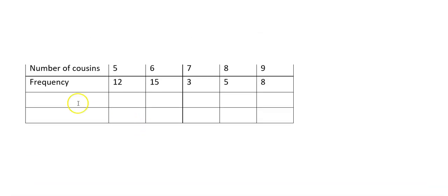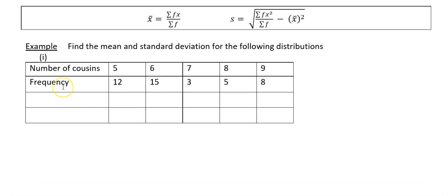The first example has got clearly defined x values. The second example has not got clearly defined values, so you'll have to find the midpoint of these particular boundaries before you can get started. For the first one, a bit more straightforward — you've got your number of cousins, and this is your equivalent of your x. Your frequency is your f.